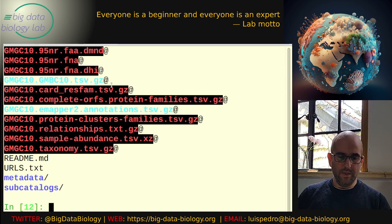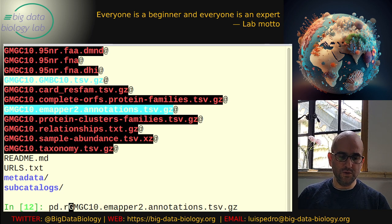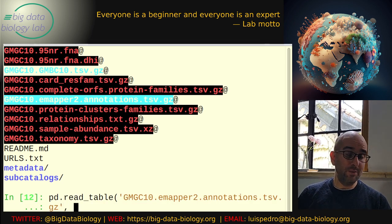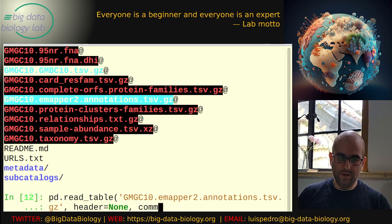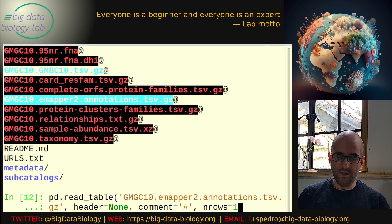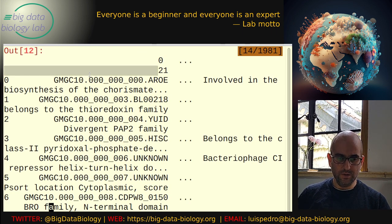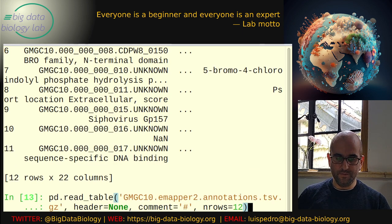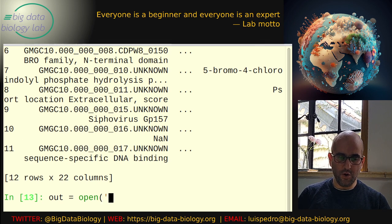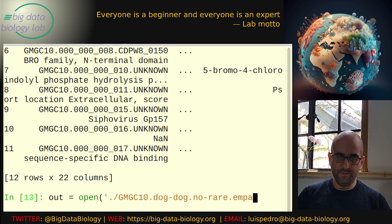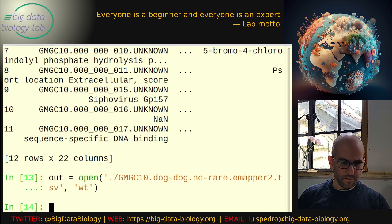I can use pandas read_table to load it, except I'm not going to be able to load all of it, so we're going to do this in chunks. First, let's check — the hash sign is a comment character I don't want, and I'm just going to load 12 rows to check. Yeah, this is pretty much what I want. So I'm going to open a new output file and call it dog_gut_no_rare_emapper.